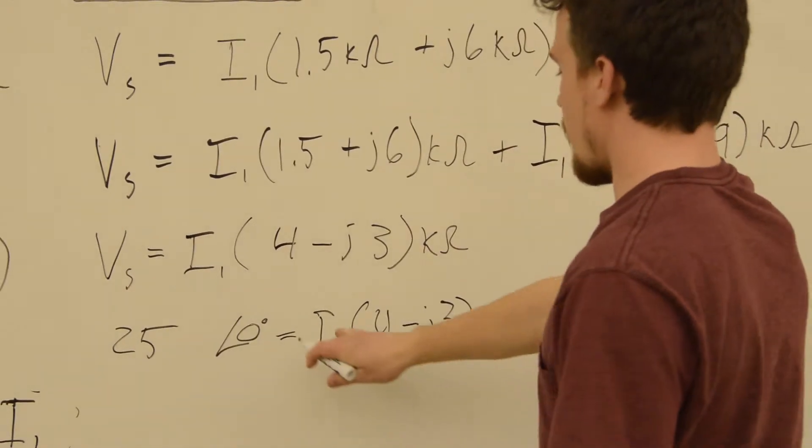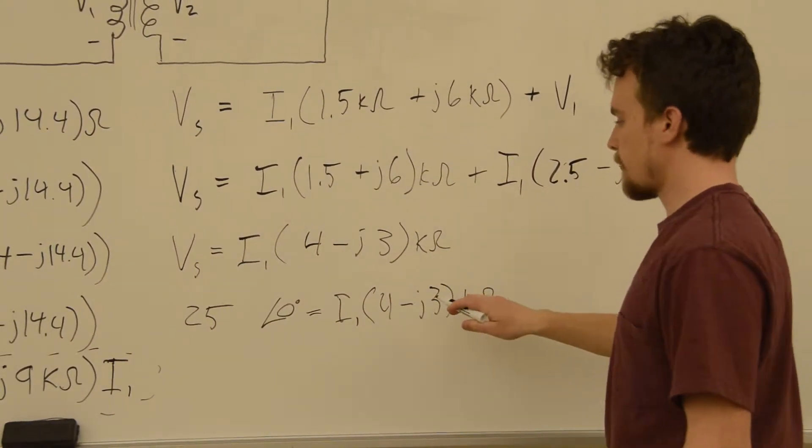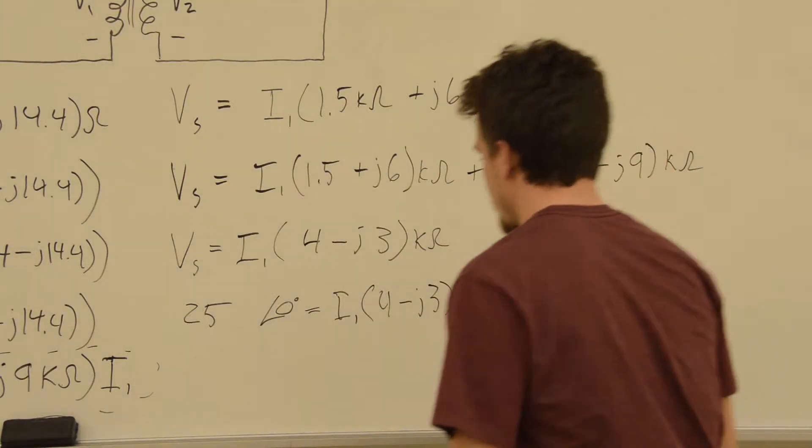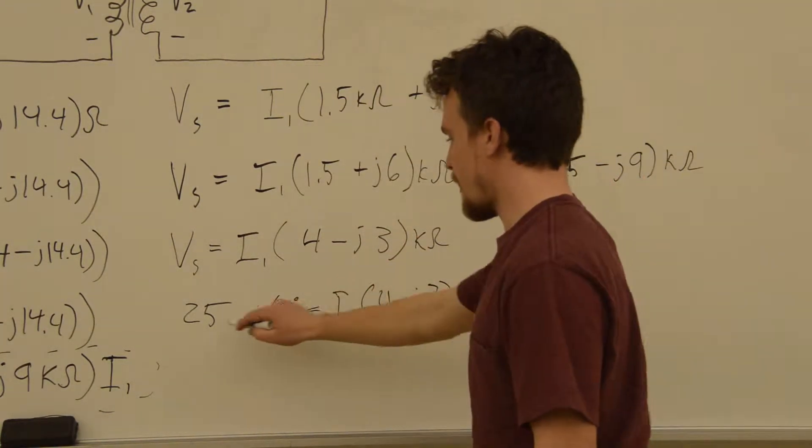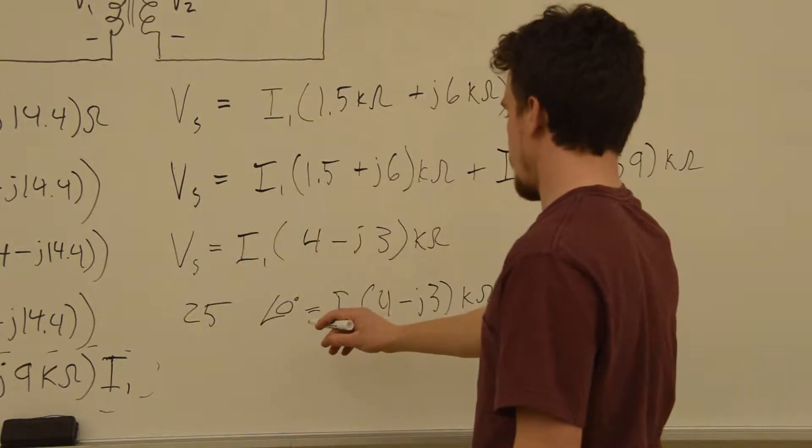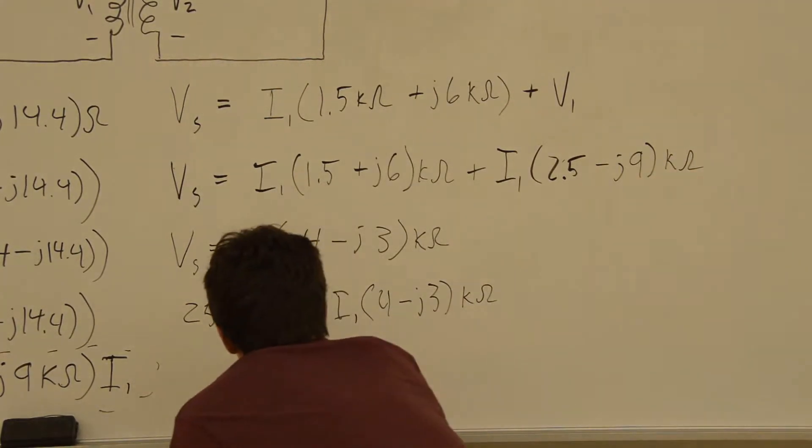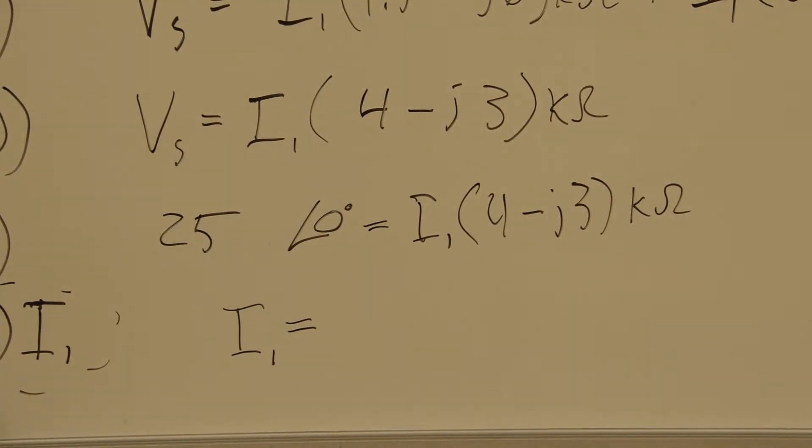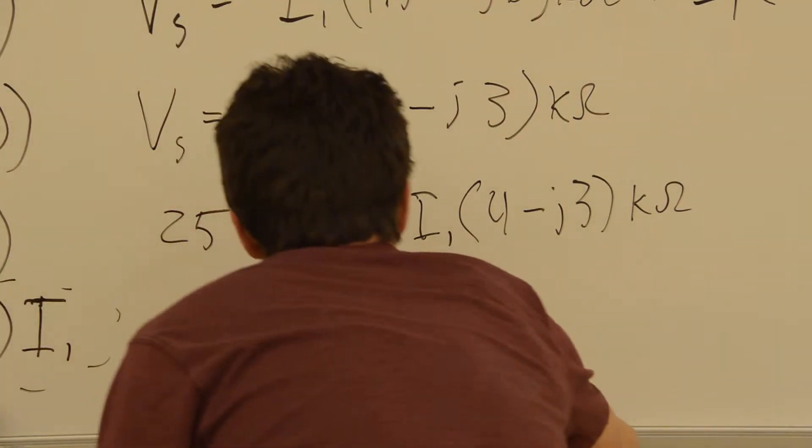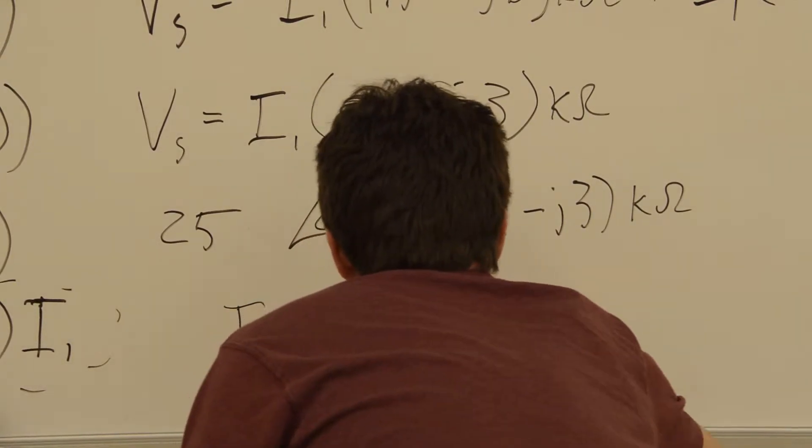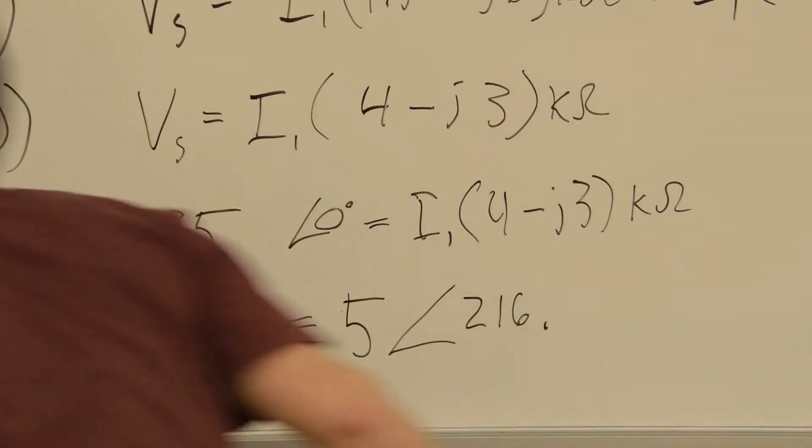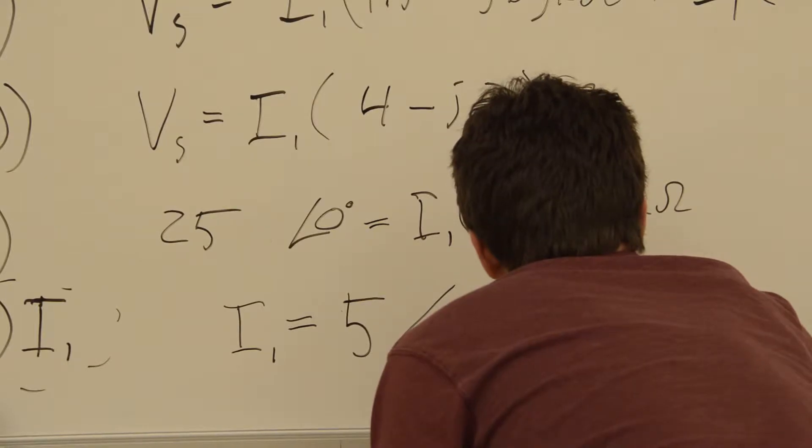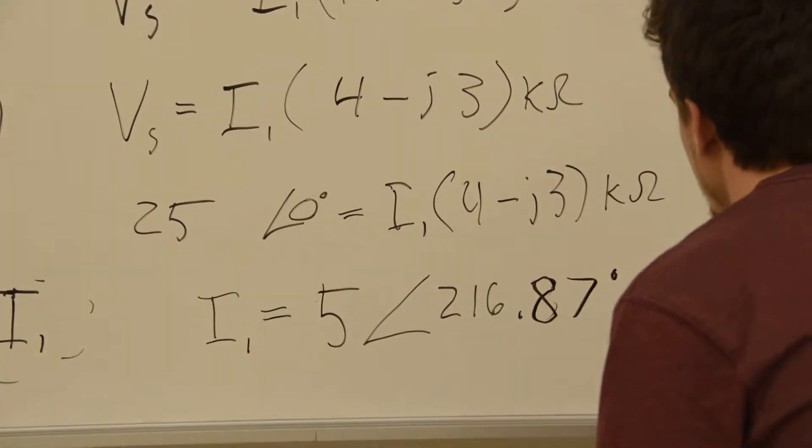So when we want a value for I1, we're going to divide by this number right here. And when we divide kilovolts by kilo ohms, we'll get amps. So this gives that we take this number and we divide by that. And we typed it into a calculator. And what we get is that I1 is equal to 5 amps with a phase shift of 216.87 degrees. And that's in amps.